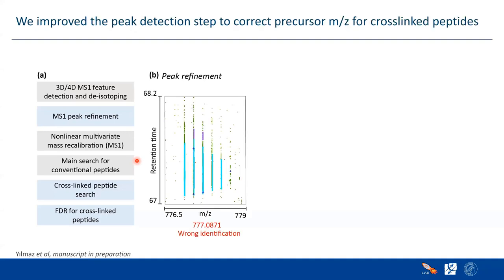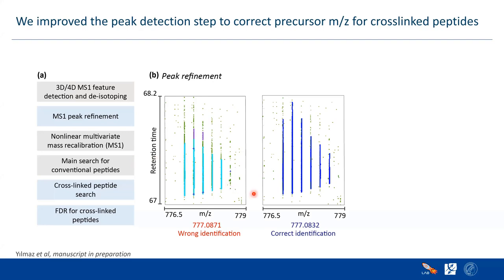Let's discuss peak refinement. Cross-link peptides are heavier than typical peptides because they consist of two peptides joined together. For these heavier peptides, the peak detection might not work properly. When we enable peak refinement, the precursor m/z is correctly defined, and then it gives us the correct identification.